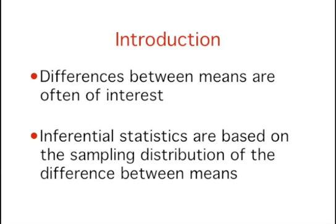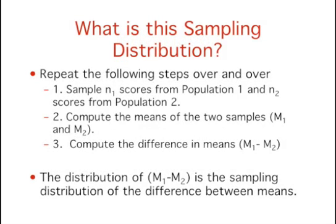Statistical analyses are very often concerned with the difference between means. A typical example is an experiment designed to compare the mean of a control group with the mean of an experimental group. Inferential statistics used in the analysis of this type of experiment are based on the sampling distribution of the difference between means. The sampling distribution of the difference between means can be thought of as the distribution that would result if we repeated the following three steps over and over again.